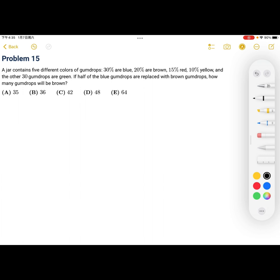Okay, so since we have everything else in percentages except for green, we can add 30% plus 20%, 15 and 10 to get that everything else sums up to 75%, meaning that 30 gumdrops are equal to 25% of the total.